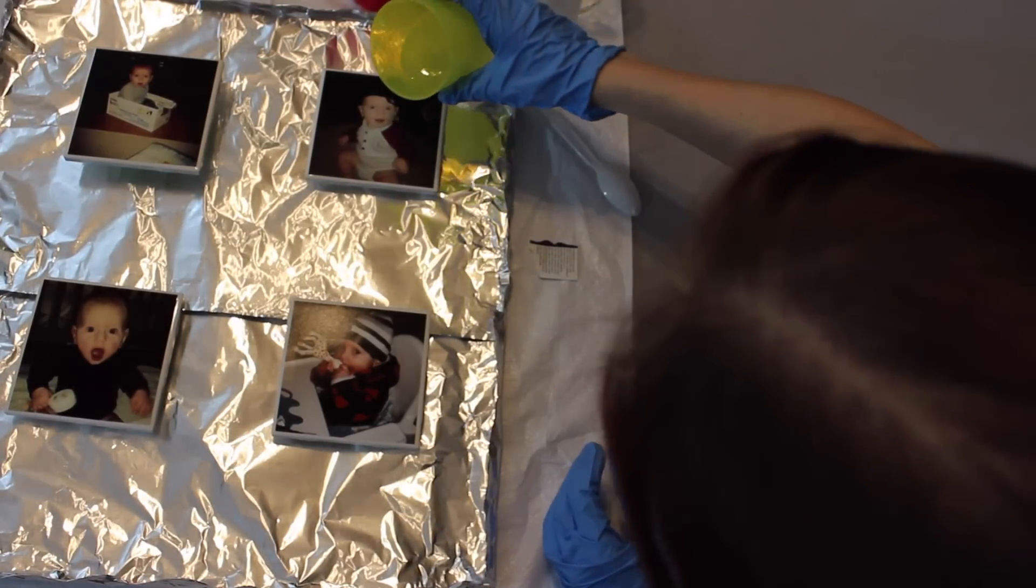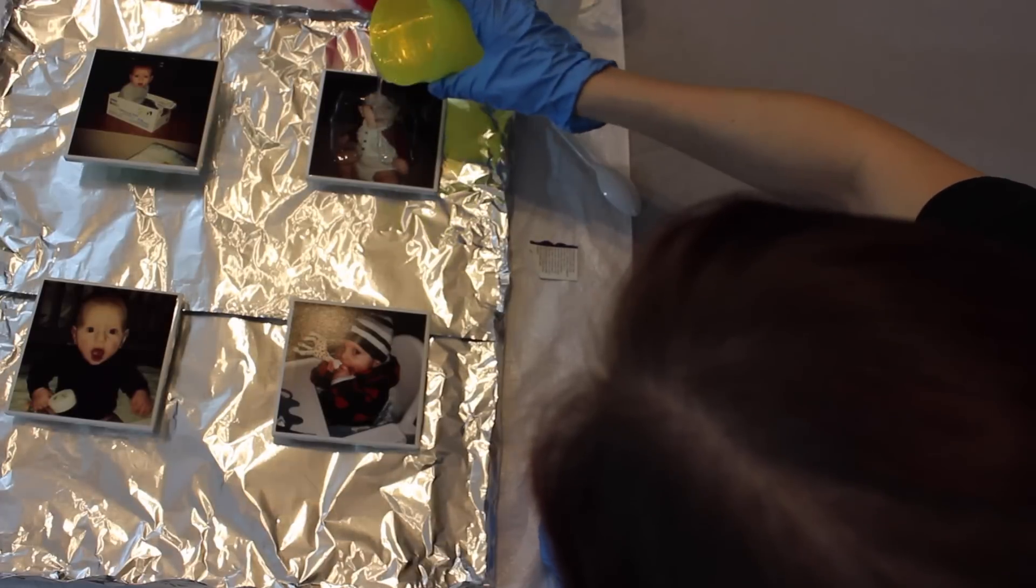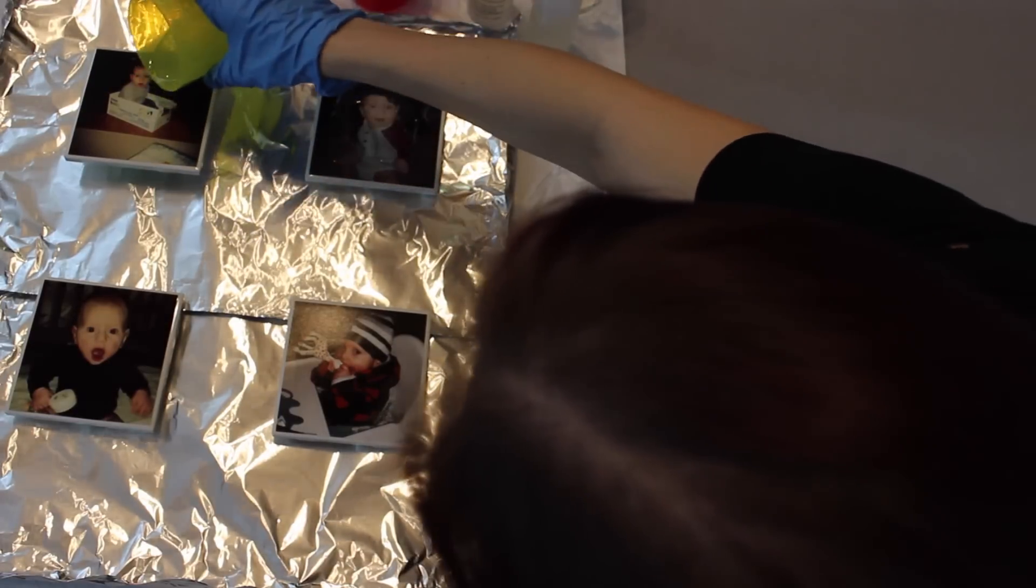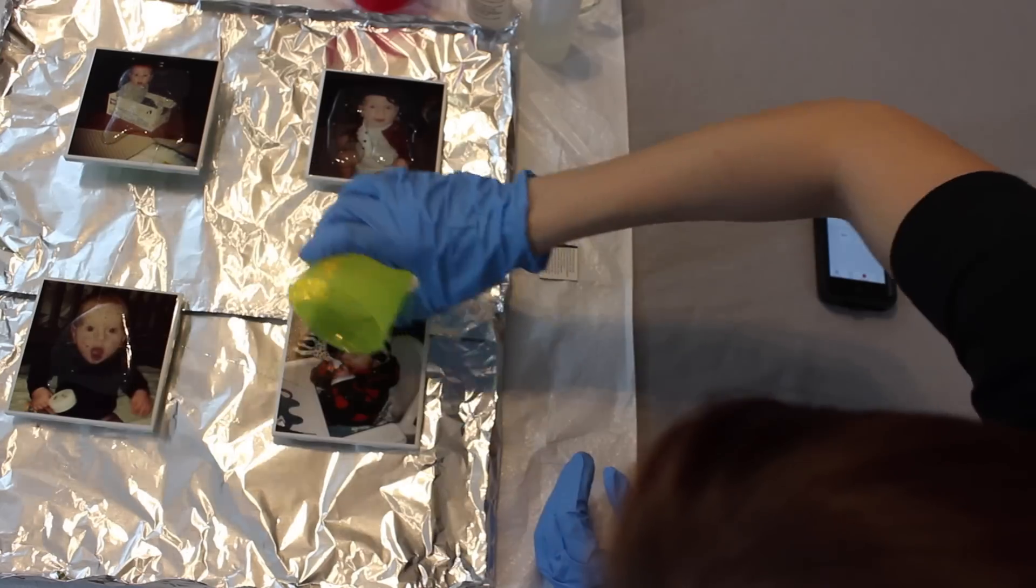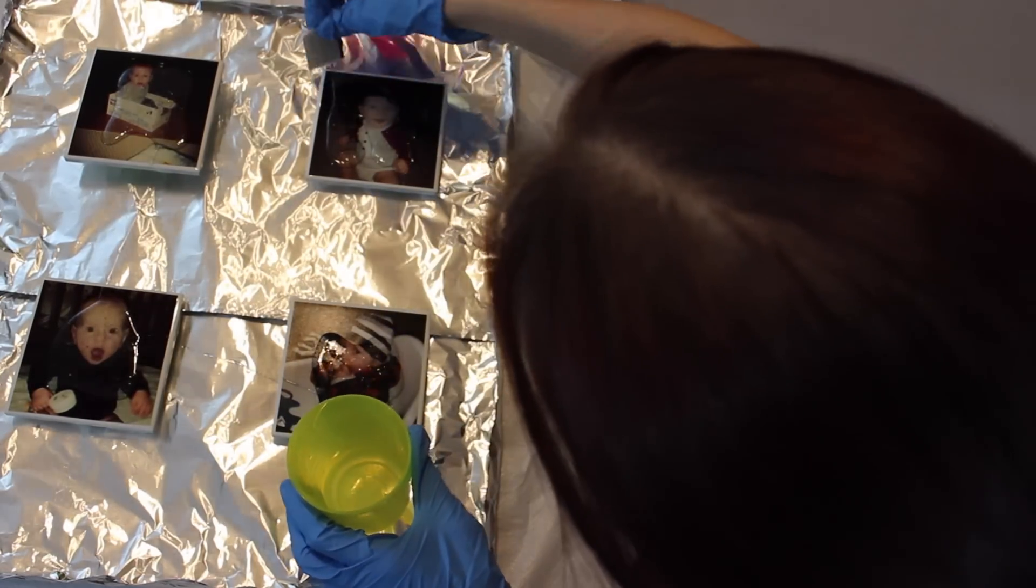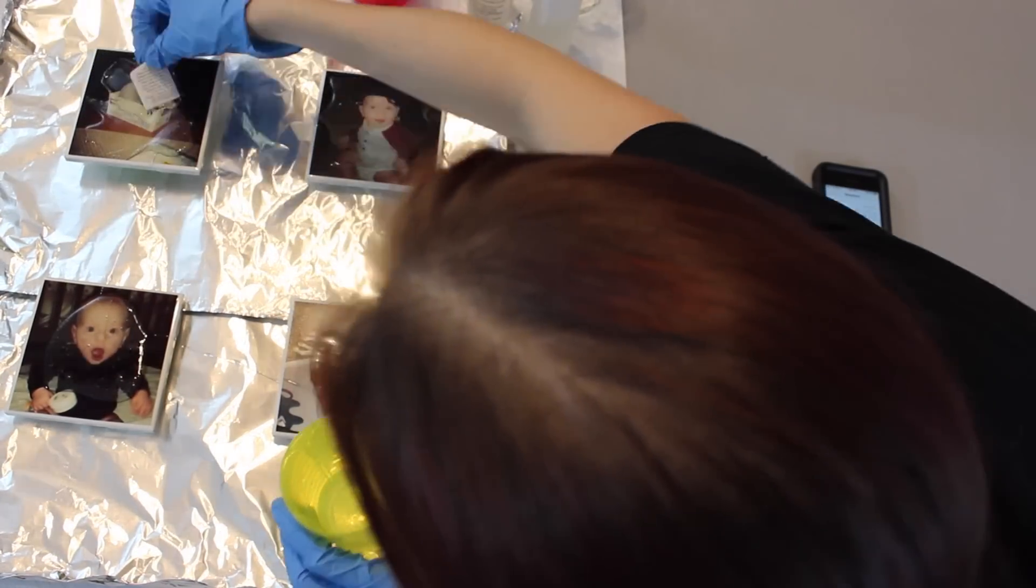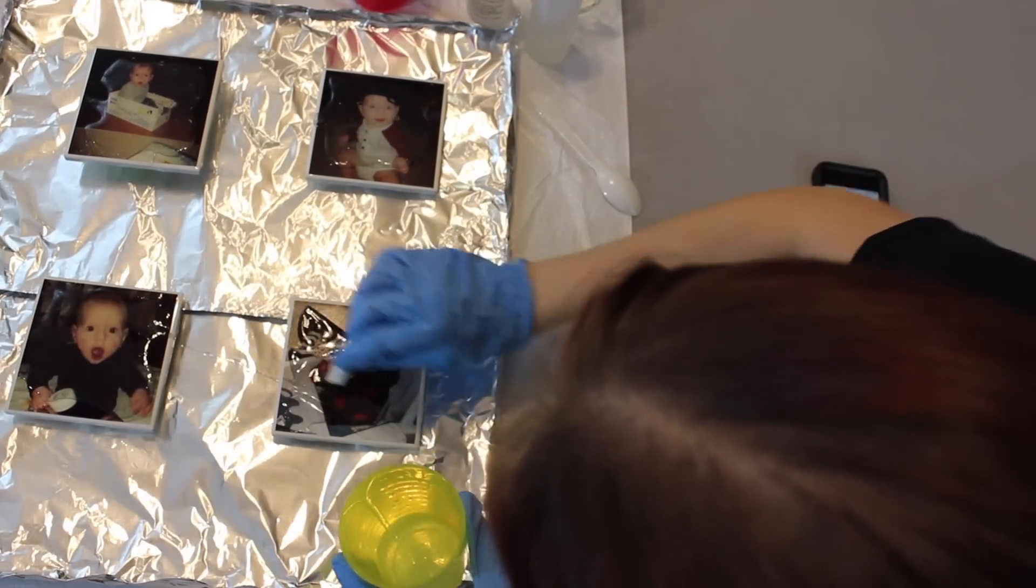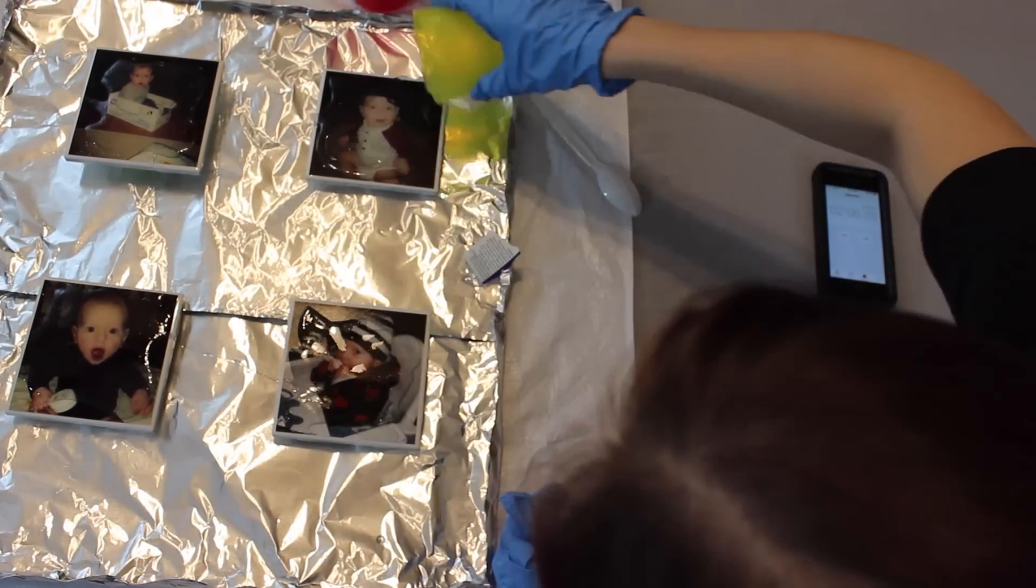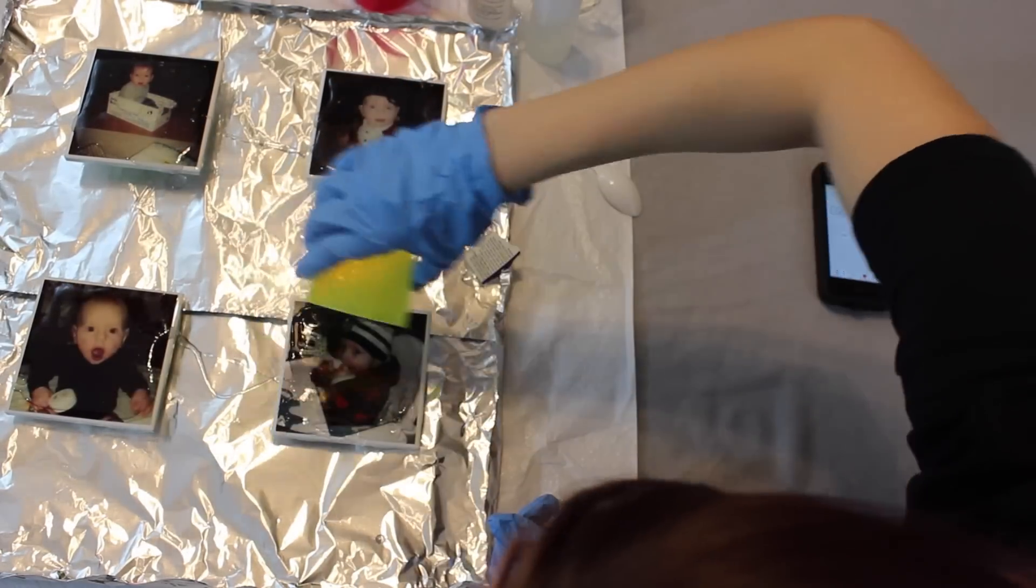Then you're going to pour your liquid over your picture very evenly. I did this in a couple different ways. I poured it all at once just to make sure that I had enough to distribute on each one, and then I poured a little more after I scraped it along the sides.